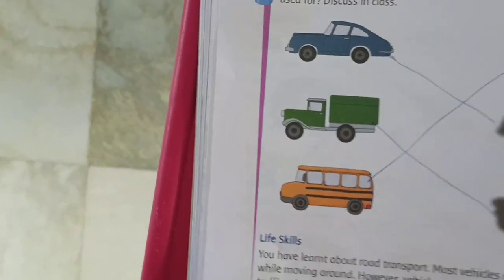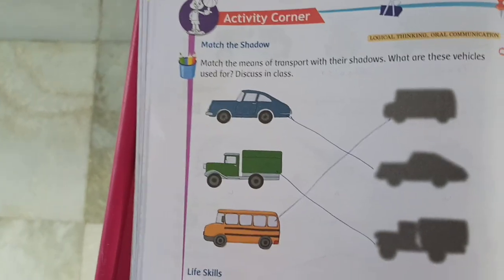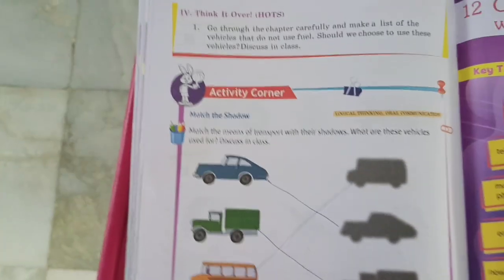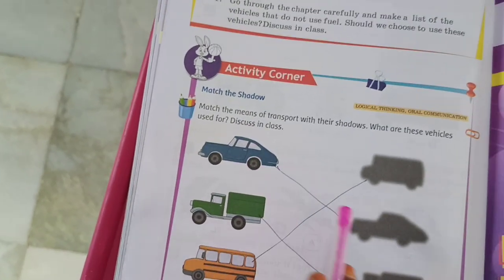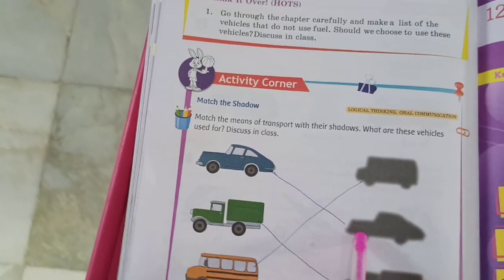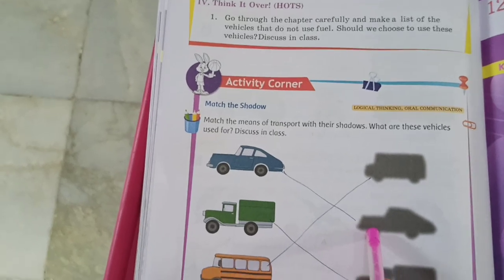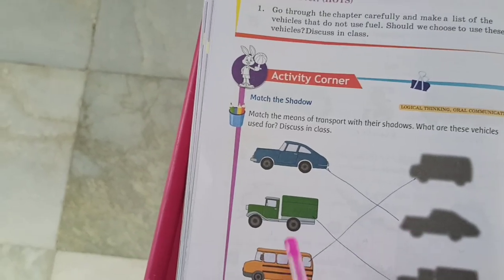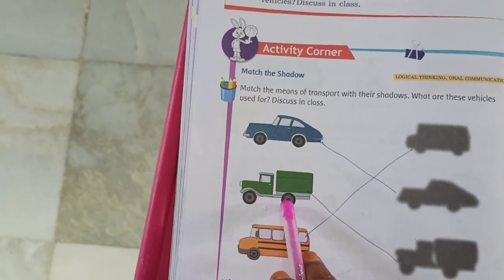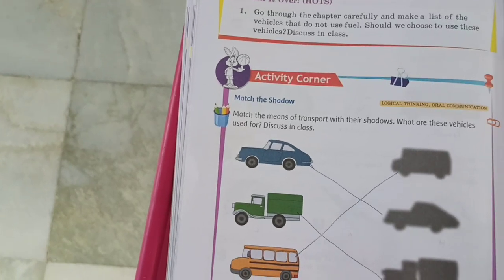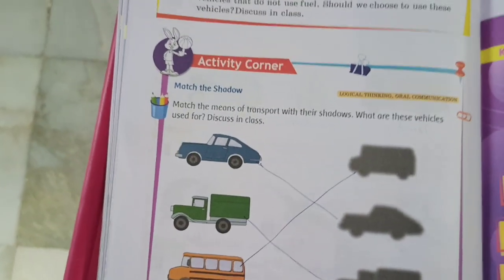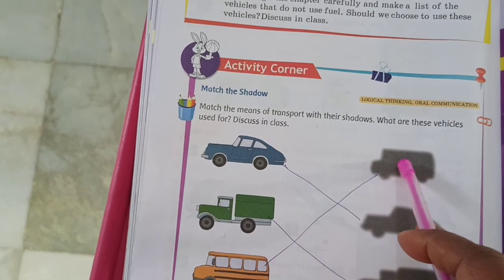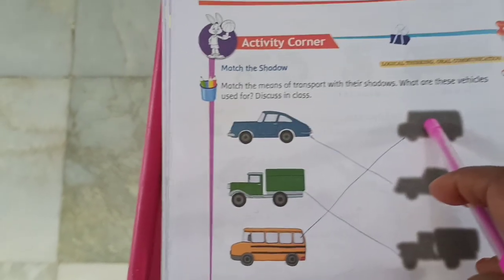Here they have given the shadows of the vehicles, and you have to match to the shadows of the vehicle. The first one is car — see the shadow and draw one line to the shadow car. And the next one is truck — here it is the truck. And the next one is bus — draw one line to bus. Is it clear children?